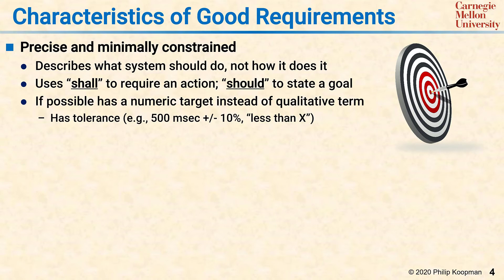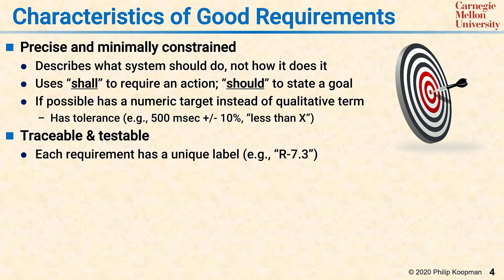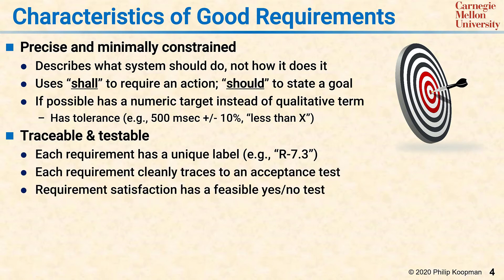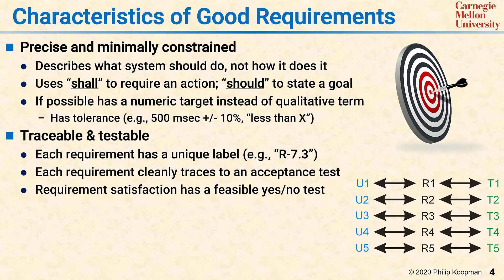A good requirement should be traceable and testable. Each requirement needs a unique label — for example, r-7.3. That label makes it easy to trace the requirement to an acceptance test.